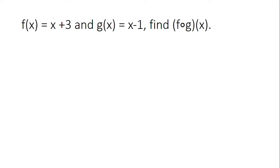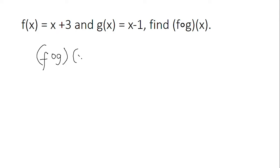We need to find f circle g of x. Once we have this type of notation, this is our indicator that we are looking for the composite of a function. From the definition: a composite function is made up of another function, or your function is composed of another function. We are going to replace our x in that certain function by our second function. So when we say f circle g of x, this is equal to f of g of x.